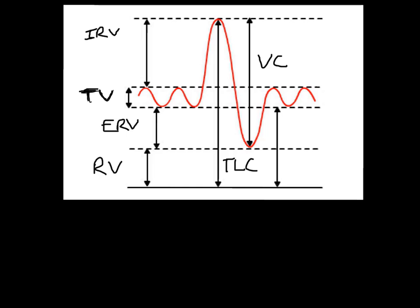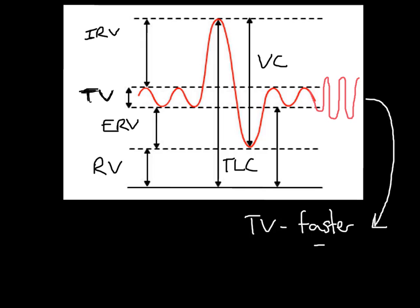So what are we interested in? Well, tidal volume. What's going to happen to tidal volume during exercise is it's going to get faster and deeper. Your breathing is getting faster and deeper. The peaks are a little bit higher and a little bit lower than at rest, representing deeper breathing. And look at the distance from the top of one wave to the top of the next — they've got narrower, representing faster breathing. So tidal volume during exercise gets faster and deeper.